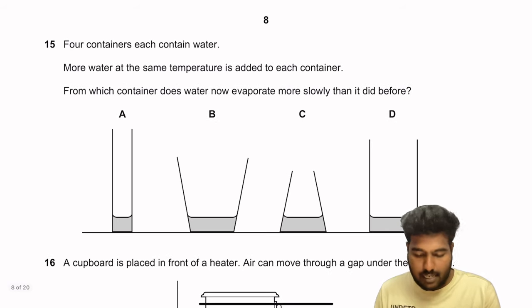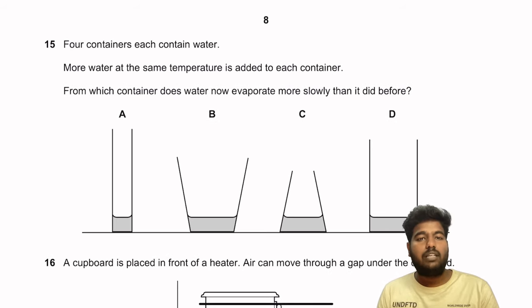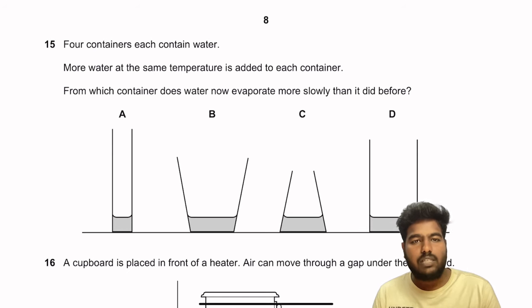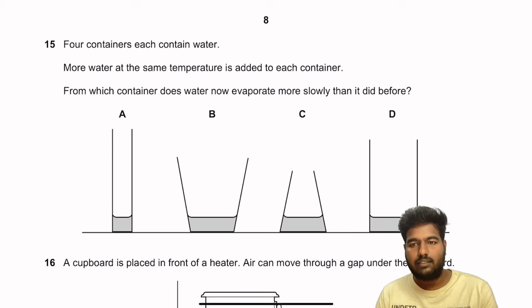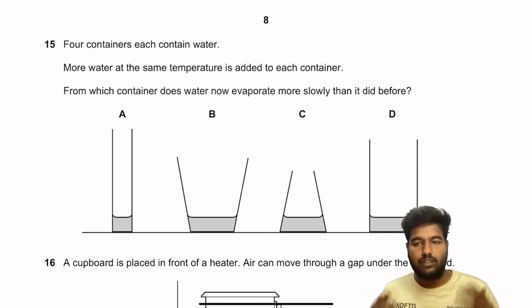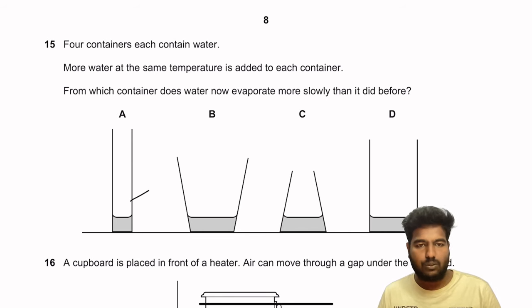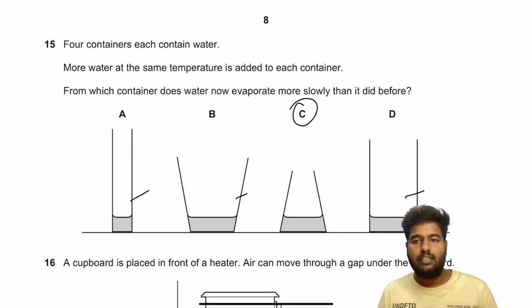Question 15: Four containers each contain water. More water at the same temperature is added. From which container does evaporation now occur more slowly? Evaporation happens only at the surface and is directly proportional to surface area. Container A has constant surface area. B increases evaporation. D is also constant. Only container C has a decreased surface area after adding water, so evaporation decreases in C.